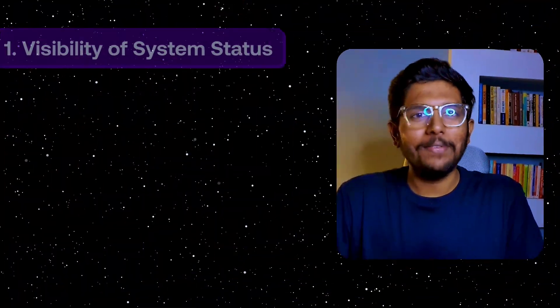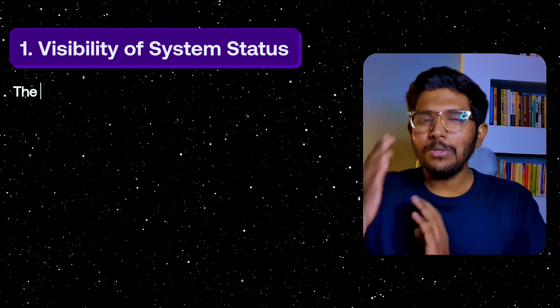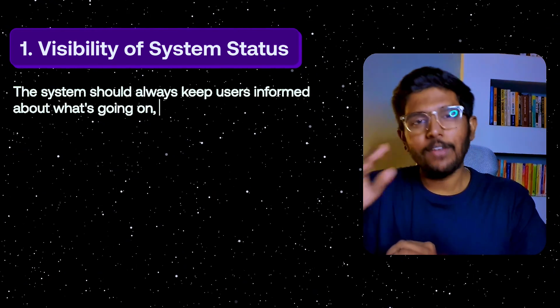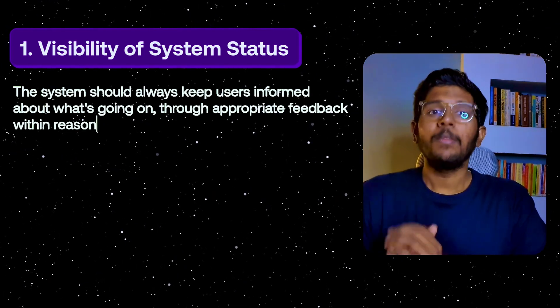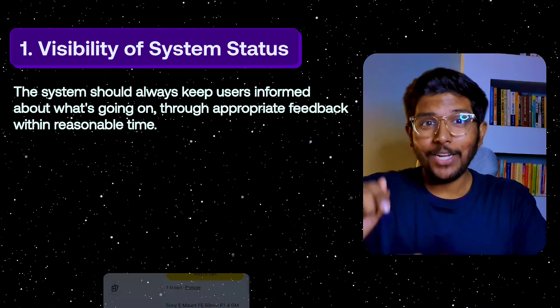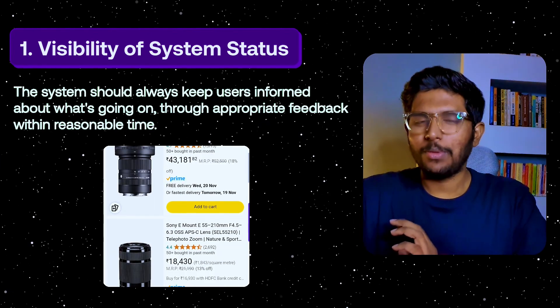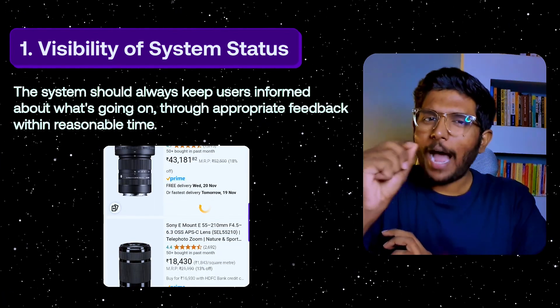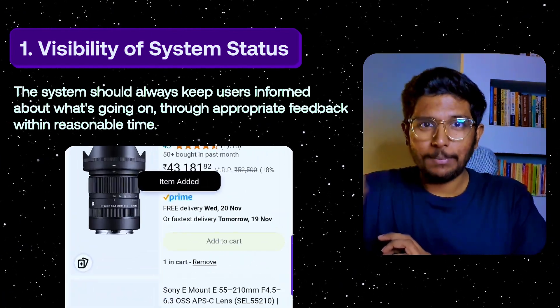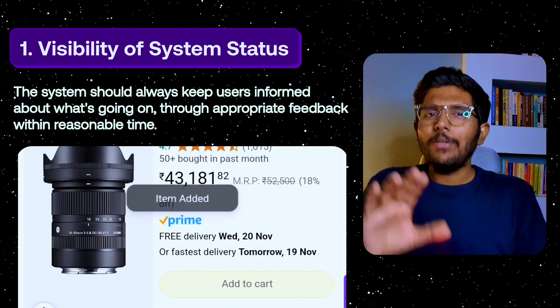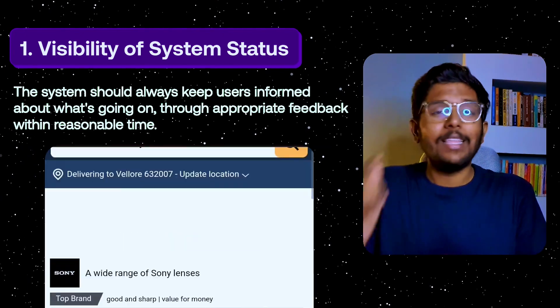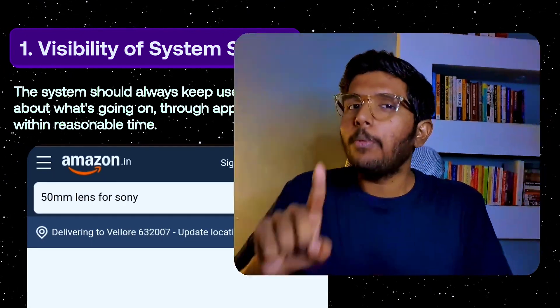The first principle is Visibility of System Status — you inform the user about what is happening in the product. For example, when you press the Add to Cart button, there is a small animation and an 'item added to cart' message. This is the user's visual confirmation. Without it, the user gets frustrated.